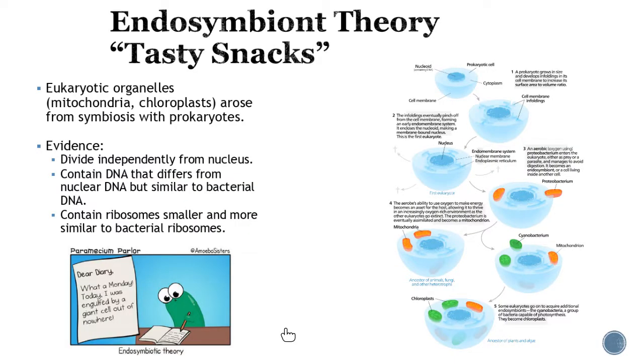One key thing about eukaryotic cells is they do have those organelles, those little tiny organs. I talked about this in 1408. I called it the endosymbiotic theory. I called it tasty snacks. The eukaryotic cells have to find a way to make energy through photosynthesis or cellular respiration. The organelles that do that are the mitochondria and the chloroplast.